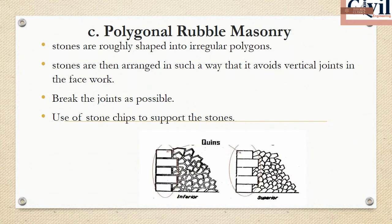The next type is polygonal rubble masonry. In this method, stones are shaped and placed in the facing. The largest stones are placed in the face of the structure.